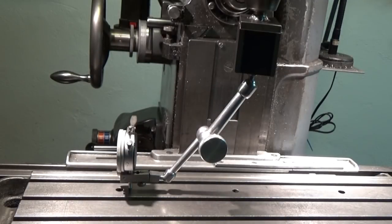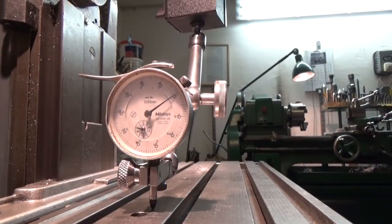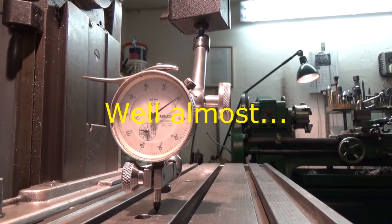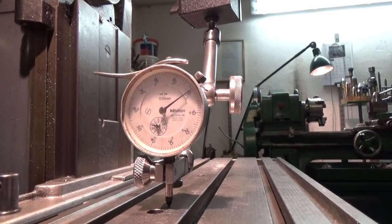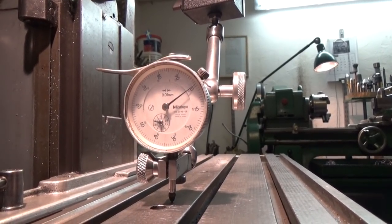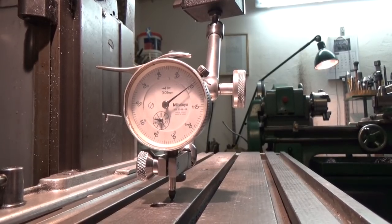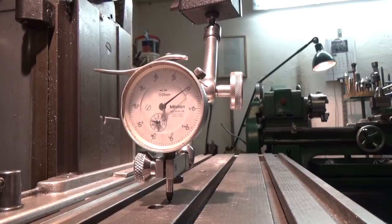Here you can see it is set up in the milling machine for tramming the milling table. And here you can see the indicator is showing zero. Then I'm going to rotate it 180 degrees and then we see what we got on the other side.